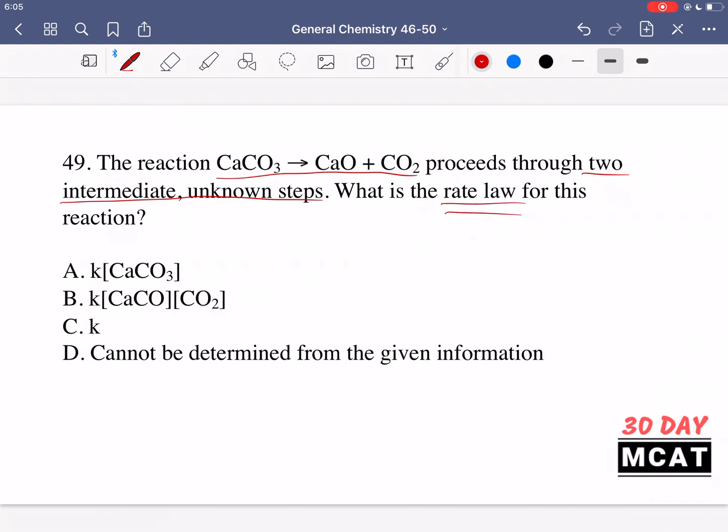Keep in mind if we have an elementary reaction, which is when we're given a reaction and told that this is the only step that there is, it only goes through one transition state and it goes from these reactants to these products, then we can determine from that what the rate law is.